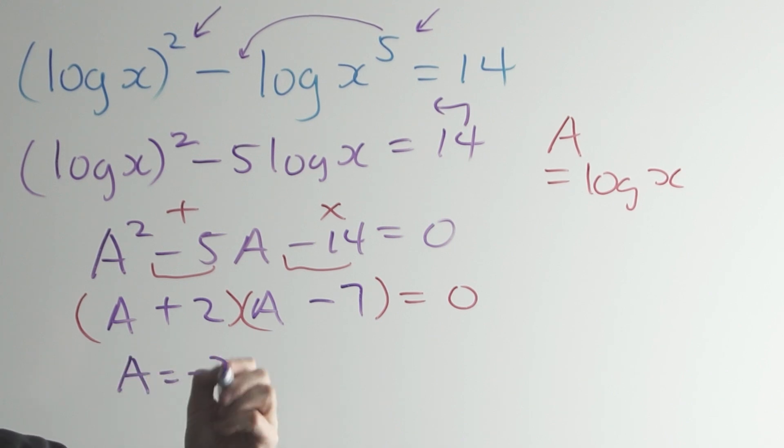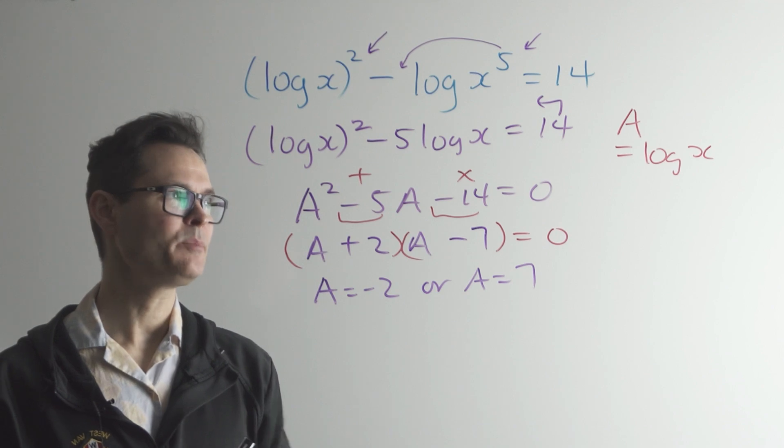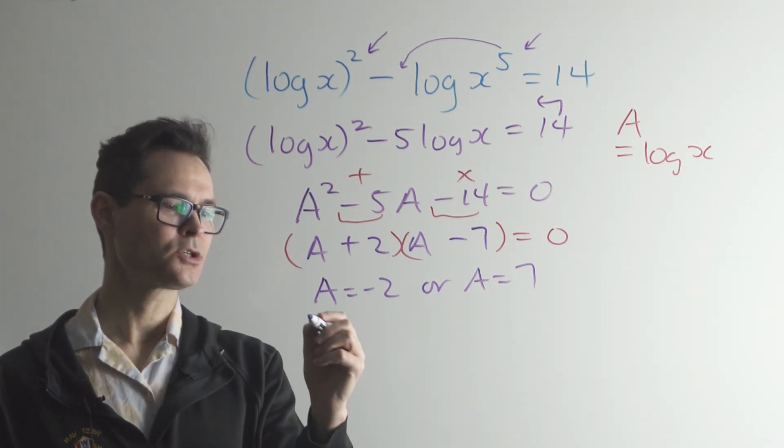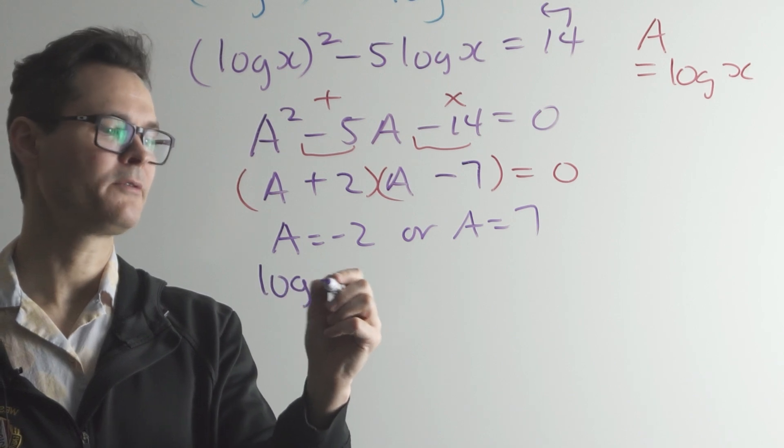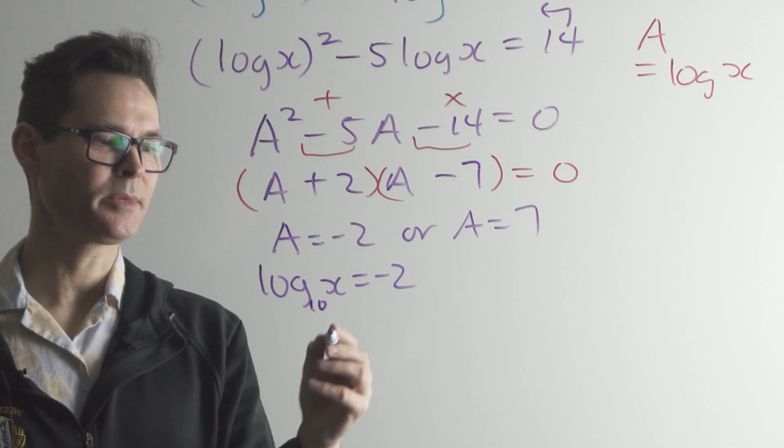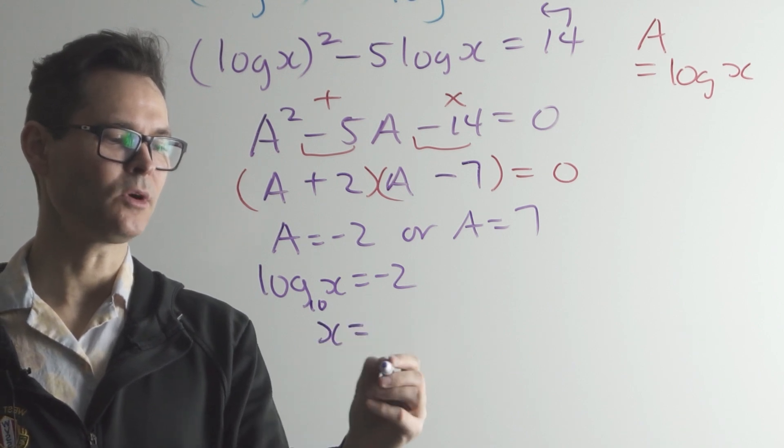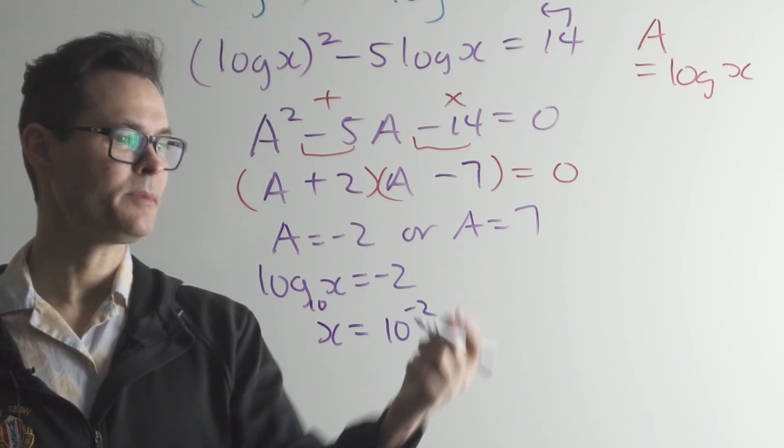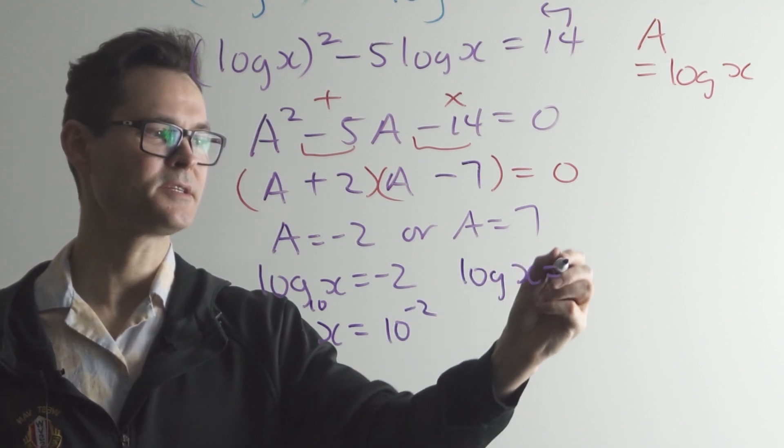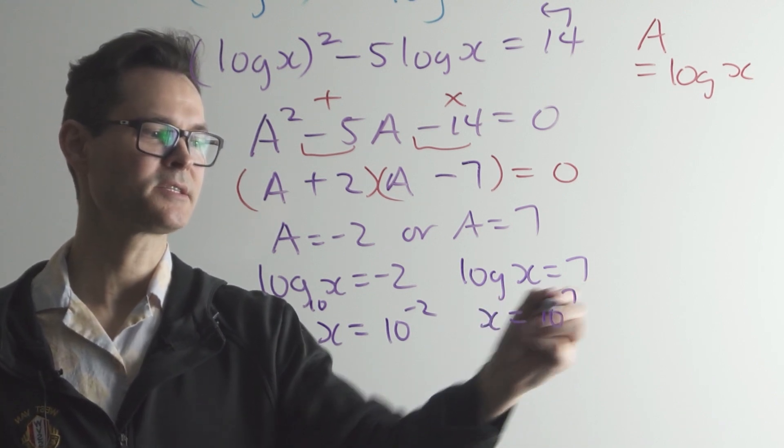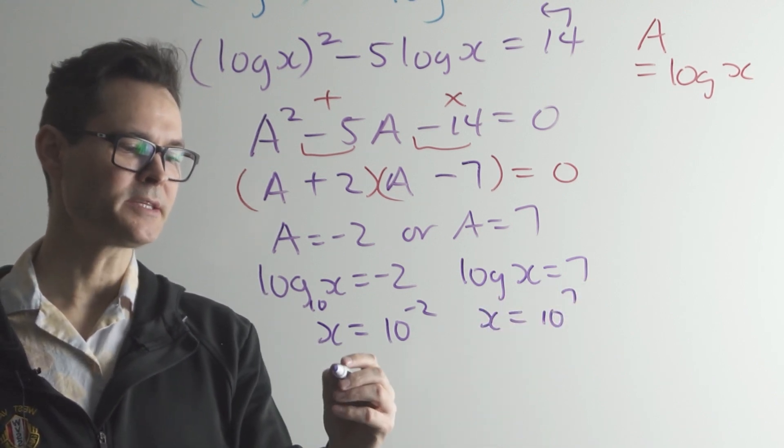Notice that A is either negative 2 or A is 7. And now we put the log x back in. So what we take out, we put back in. So if the log of x is equal to negative 2, remember the base is 10 here, it's the common log, then x equals 10 to the negative 2. Same here. If the log of x is equal to 7, then x equals 10 to the 7th power.